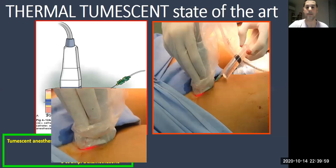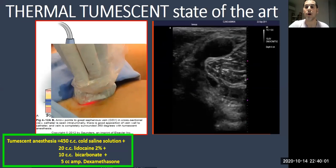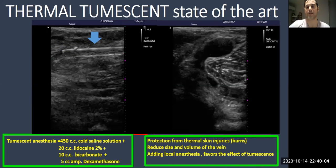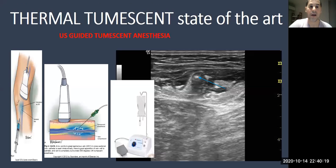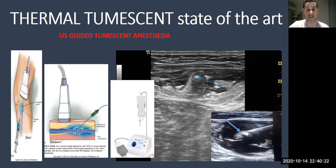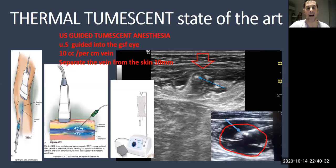This is how we perform the ultrasound-guided procedure. We inject the tumescent anesthesia in order to protect the skin from thermal injuries, reduce the volume and size of the vein, and add local anesthesia favoring the effect of tumescence. We separate the vein from the skin, then inject 10 cc per centimeter of vein treated into the great saphenous vein under ultrasound guidance.